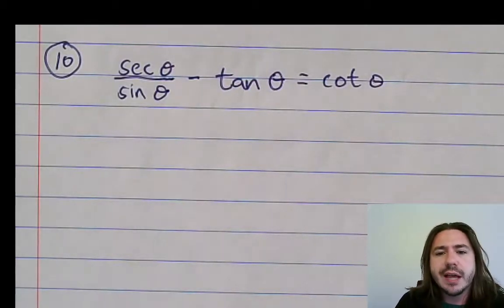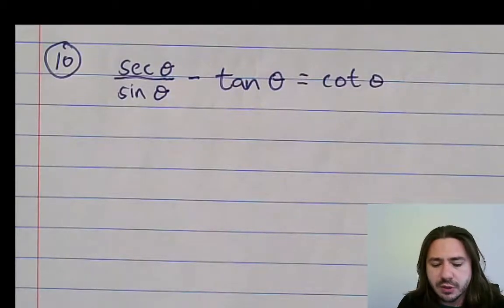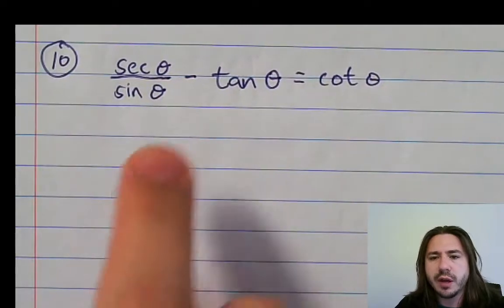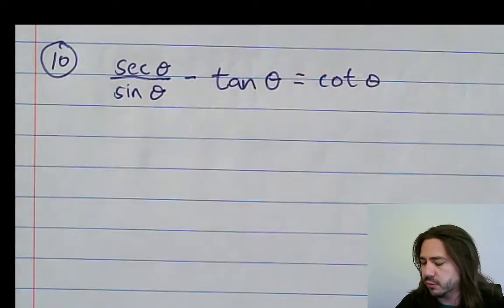So the last problem here is number 10, and we've got secant theta divided by sine theta minus tangent theta equals cotangent theta. I think what I want to do here is try to rewrite everything in terms of sine and cosine and try to get this left side to look like the right side.